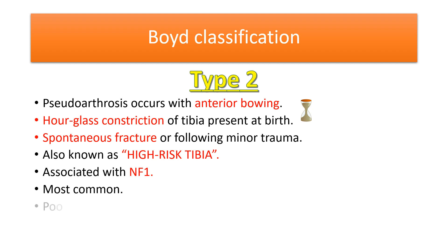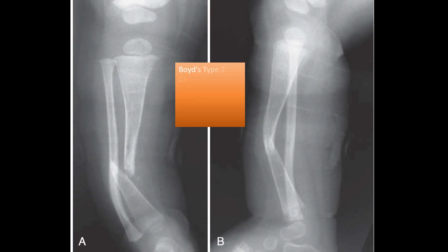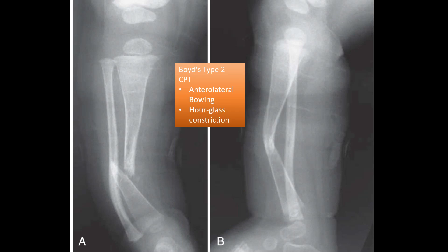Boyd's Type 2 has an association with neurofibromatosis type 1, it is the most common type, and it has the poorest prognosis. A plain radiograph shows anterior-lateral bowing and hourglass constriction of the tibial diaphysis.